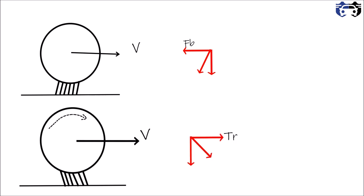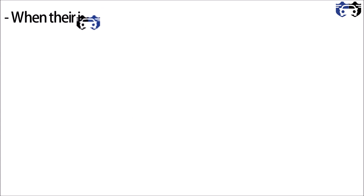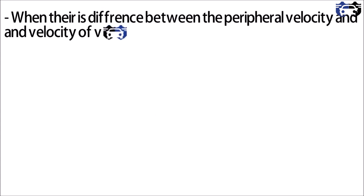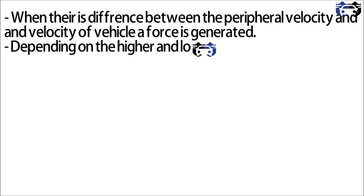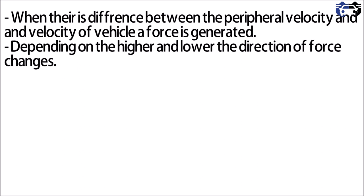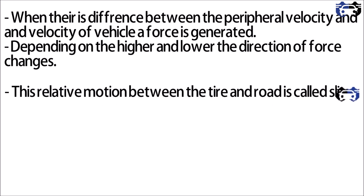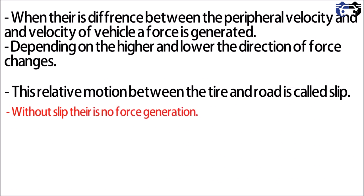From this we get the following observation: when there is a difference between the peripheral velocity and the forward velocity of the vehicle, a force is generated. Depending on which is higher — the peripheral or the forward velocity — the direction of force changes. This relative motion between the tire and the road is called slip, and without slip there is no force generation.